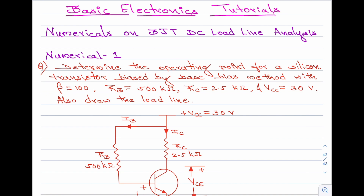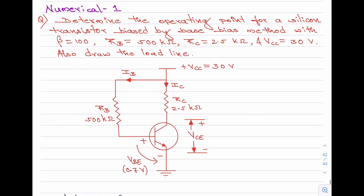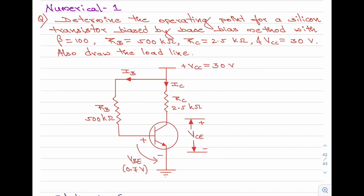Let me read out the question first. Determine the operating point for a silicon transistor biased by base bias method with beta equal to 100, Rb equal to 500 kilo ohms, Rc equal to 2.5 kilo ohms, and Vcc equal to 30 volts. Also, draw the load line. Coming to the circuit, the supply voltage is 30 volts, the resistor at the collector is 2.5 kilo ohms, the resistor at the base is 500 kilo ohms, and since it is a silicon transistor, the voltage across the base-to-emitter terminals will be 0.7 volt.